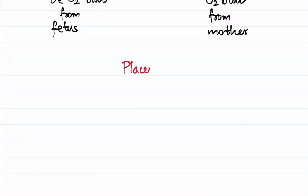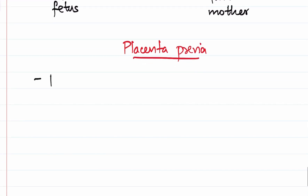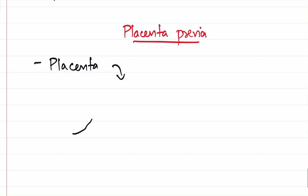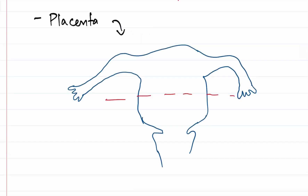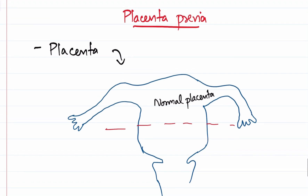Now moving on to placenta previa. Usually the placenta is located in the upper segment of the uterus, where normal implantation takes place. If the embryo gets implanted in the lower segment of the uterus, or anywhere outside the upper segment of the uterus, we call it placenta previa.